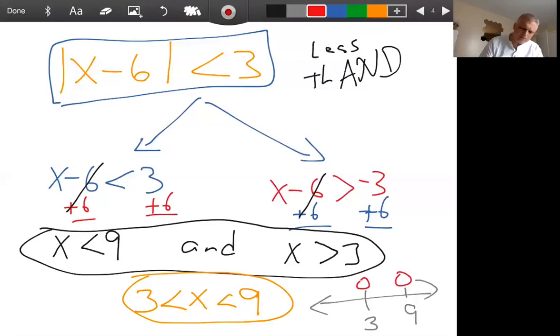And it's got to be bigger than 3 and at the same time less than 9. So this would be the graph if they asked you for the graph. And then either one of these would be good answers if they wanted you to just say what is the solution to absolute value of X minus 6 is less than 3.